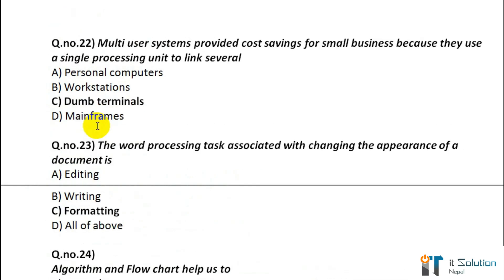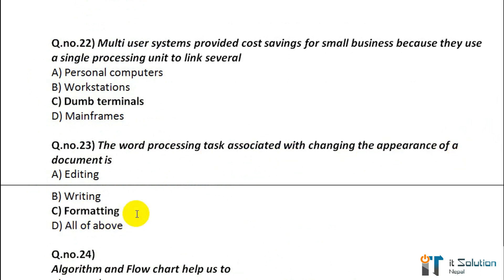Question number 22: Multi-user systems provide cost savings for small businesses because they use a single processing unit to link several — its correct answer is dumb terminals. Question number 23: The word processing task associated with changing the appearance of a document is which? Its correct answer is formatting.